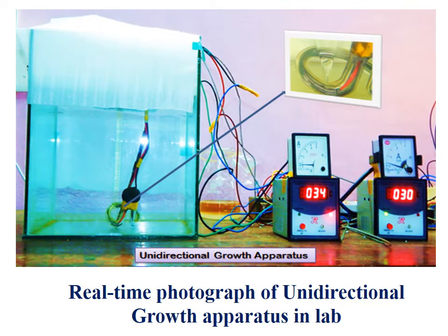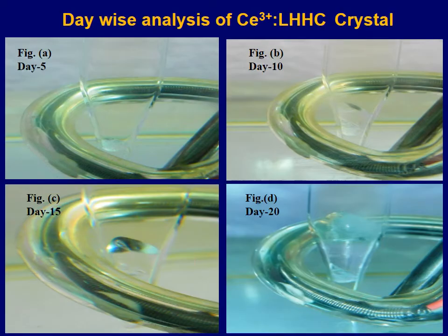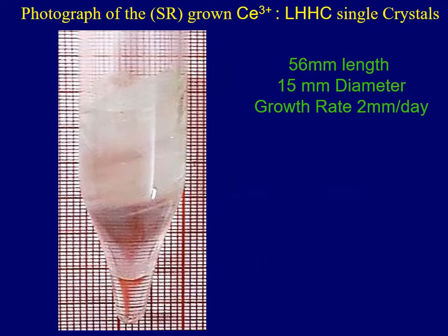This is the real-time photograph of the unidirectional growth apparatus in the lab. Day-by-day analysis of CE3+ ion-doped L-HHC single crystals shows growth at day 5, day 10, day 15, and day 20. The resulting unidirectional single crystal grown by the Shankar Narayanan Ramaswamy method has 56 mm length, 15 mm diameter, and a growth rate of 2 mm per day.